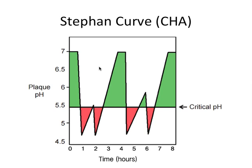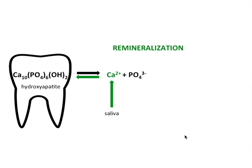Anything above the critical pH is the safe zone; anything below would be the danger zone. Also, the amount and quality of the saliva will determine how quickly we can buffer back to the safe zone. So we talked about bicarbonate, but saliva also contains calcium, which drives the reaction to the left again by Le Chatelier's principle.